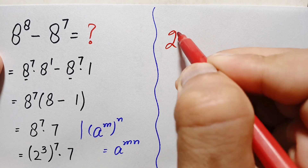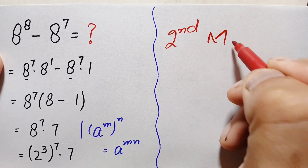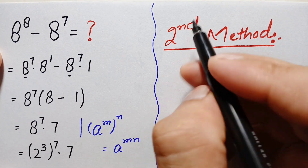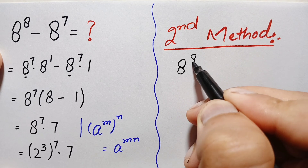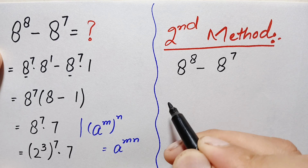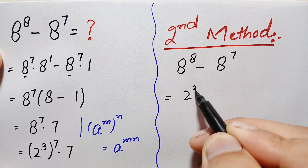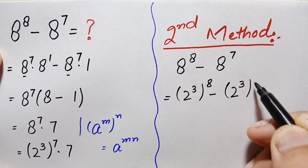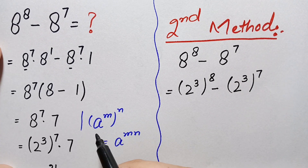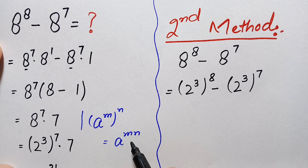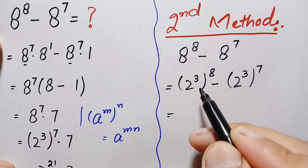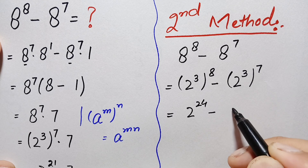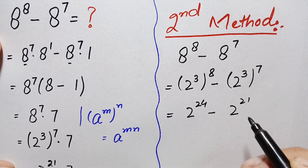Now I will solve this problem using the second method. The problem is 8 raised to power 8 minus 8 raised to power 7. We can write 8 as 2 cubed, so this becomes 2 raised to power 3, whole raised to power 8, minus 2 raised to power 3, whole raised to power 7. Using the identity (a^m)^n = a^(m×n), this becomes 2 raised to power 24 minus 2 raised to power 21.